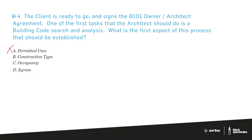So permitted uses is out — that's zoning, not the building code search and analysis. The question really becomes: construction type, occupancy, or egress?